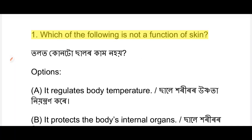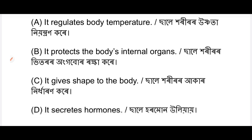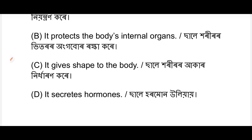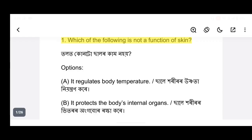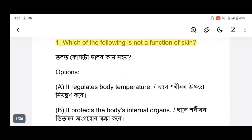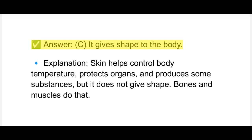First question: which of the following is NOT a function of skin? Options are: it regulates body temperature, it protects the body's internal organs, it keeps the body safe, it secretes hormones. The answer is that skin does NOT give shape to the body. Skin controls body temperature, protects organs, and creates hormones - but bones and muscles give the body its shape.